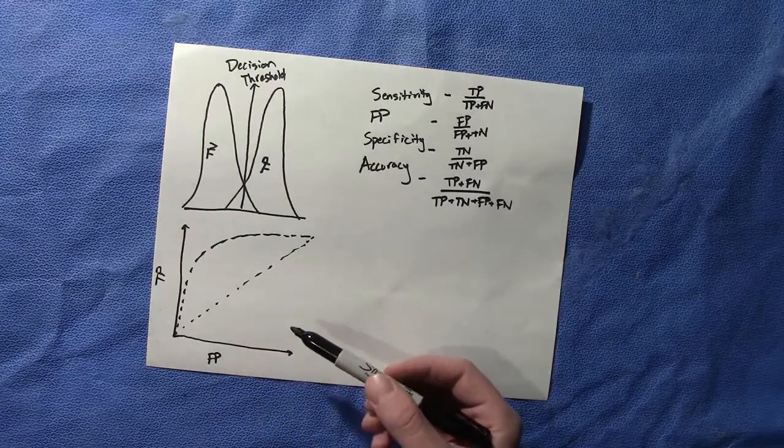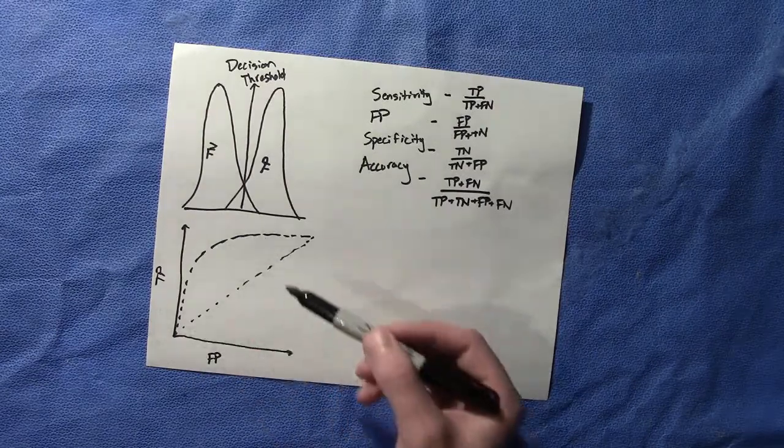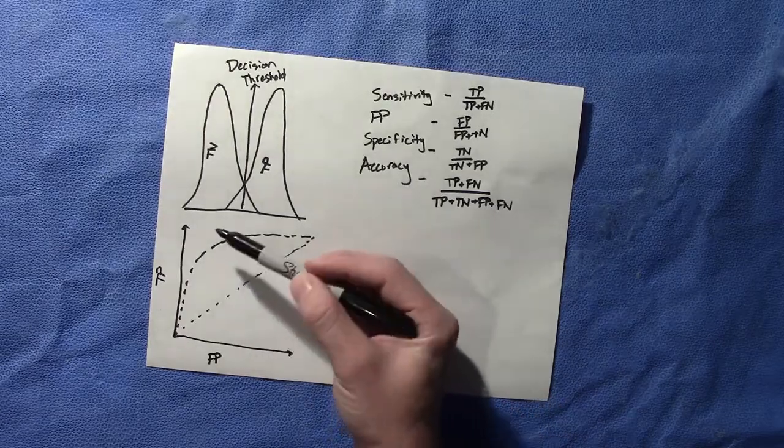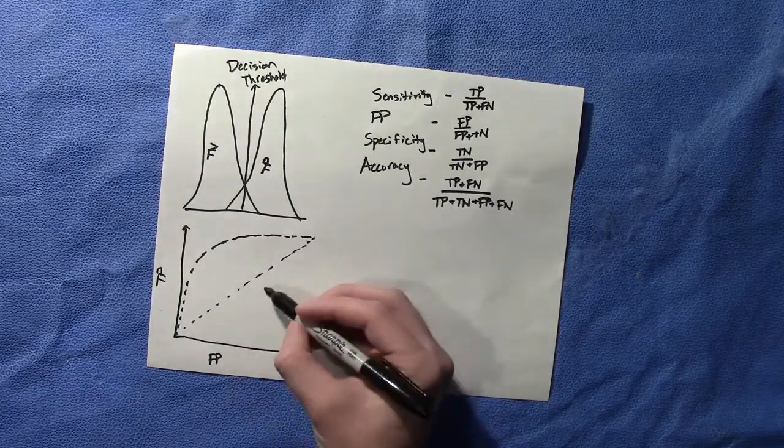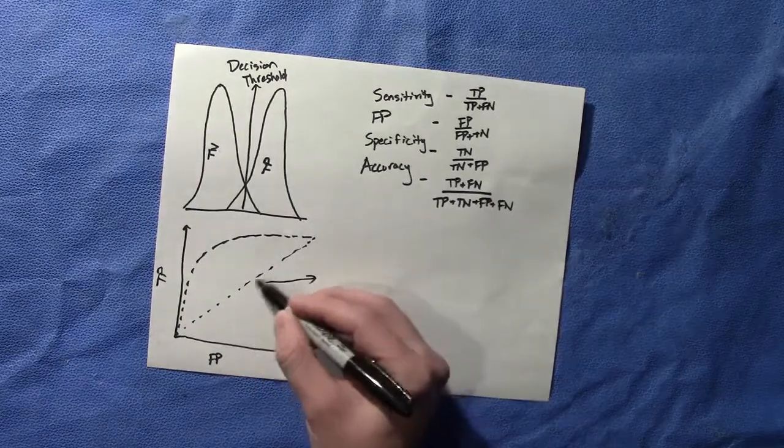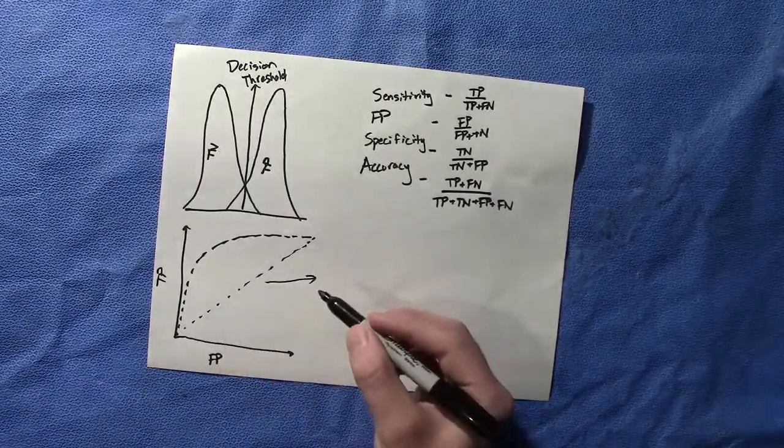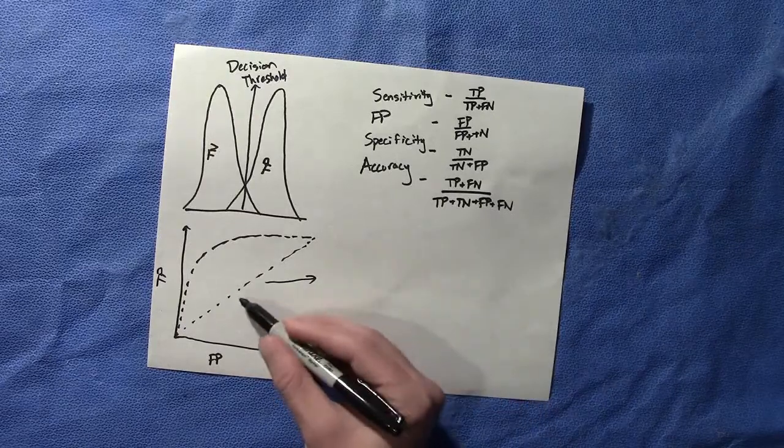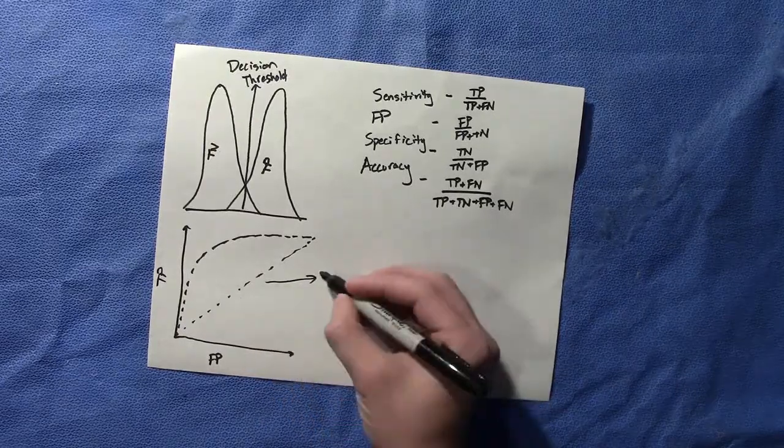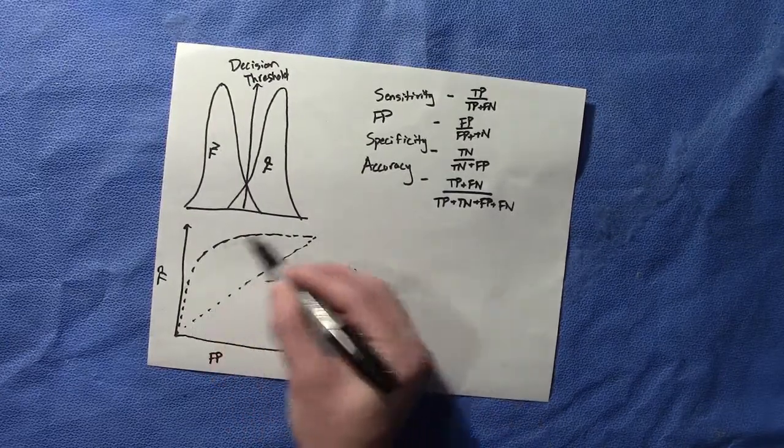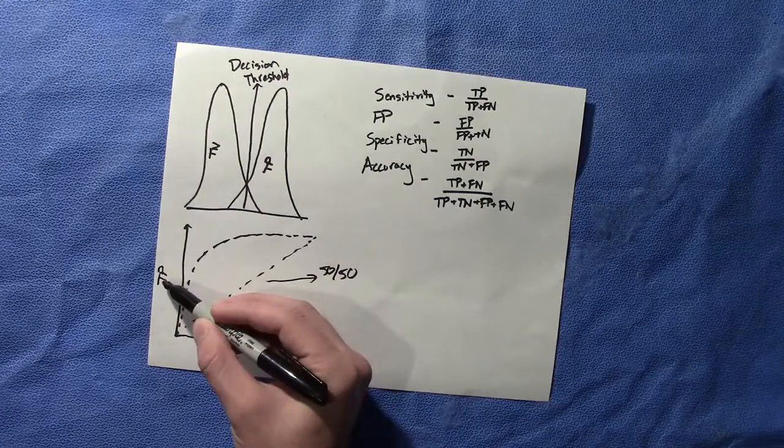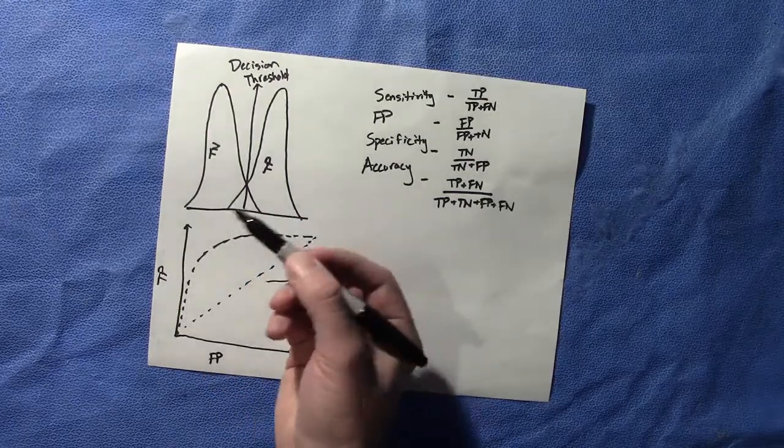So if the curve bends towards the upper left corner, then the better the test is. So let's consider this linear line. This line right here, just perfectly linear. That's saying that essentially you have a 50-50 guess on getting it right or wrong. And then as it curves up, you're getting more true positives, which again makes sense.